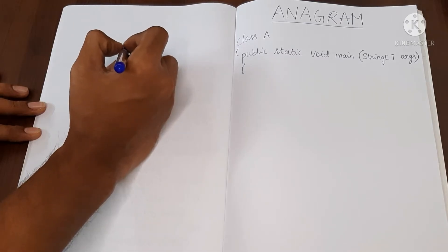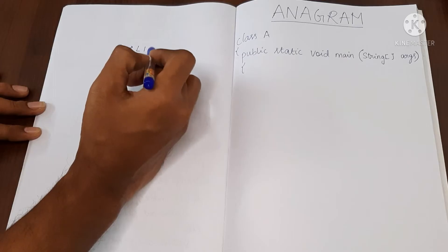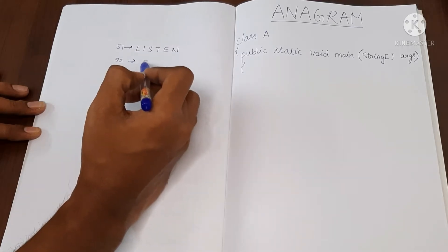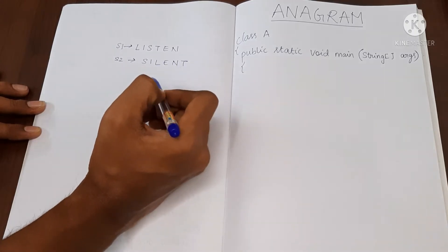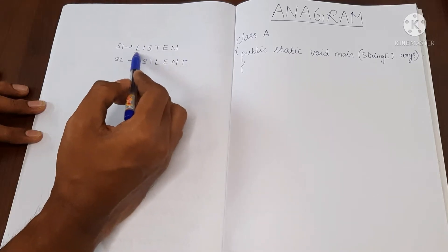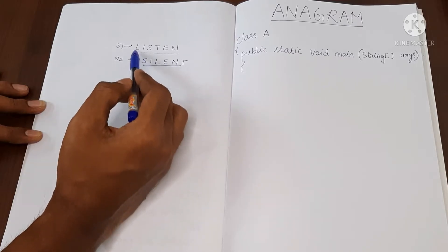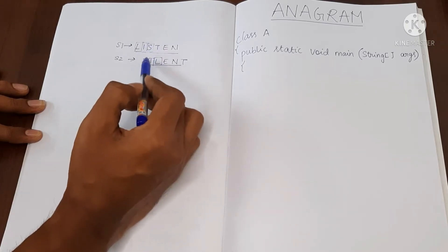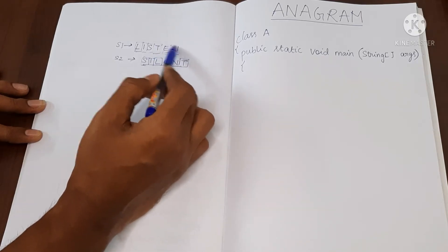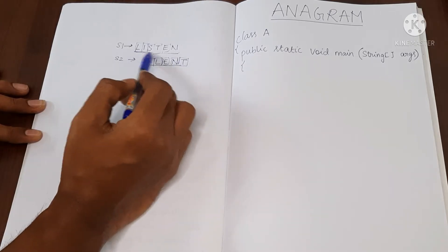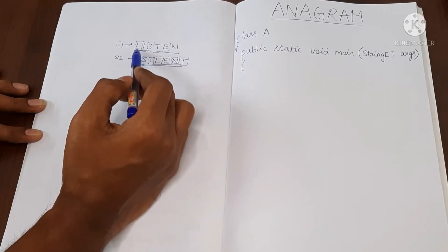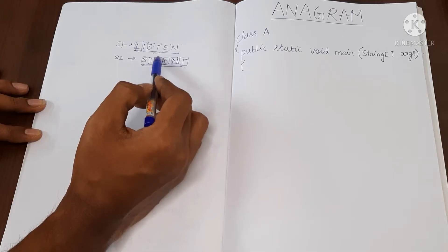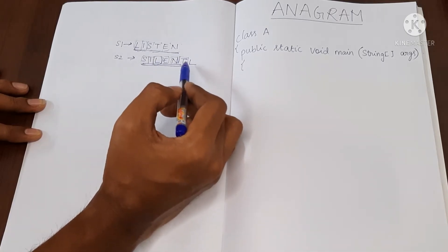Let's say we have a string called 'listen' and we have one more string called 'silent'. We can notice that whatever characters we have used in this word are only used in this one. We have one L here, and one L over there — I, I, S, S, T, T, E, E, N, N. Every character in S1 has appeared in S2, and every character must appear only as many times as it has appeared in string one. So if L appears once in S1, L should appear only once in S2; if there were two L's, we would not call these two strings anagram.